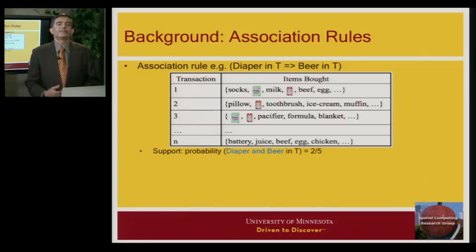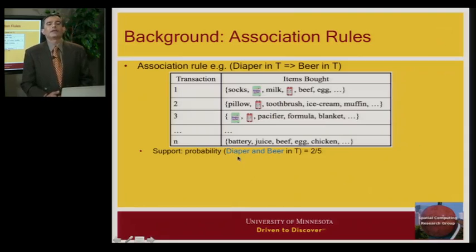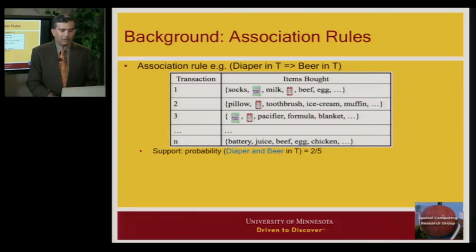Now, this support has some very interesting computational property. For example, the support for diaper has to be greater than the support for diaper and beer. Because every transaction that has diaper and beer certainly has diaper. And because of that, if we wanted to find patterns where support is at least 10%, then you can start with singleton. Just look at individual items, throw away all items, which have support less than 10%. And then you make pairs out of remaining items. And then you continue on. And I will show you the algorithm. So this was able to scale up very well.